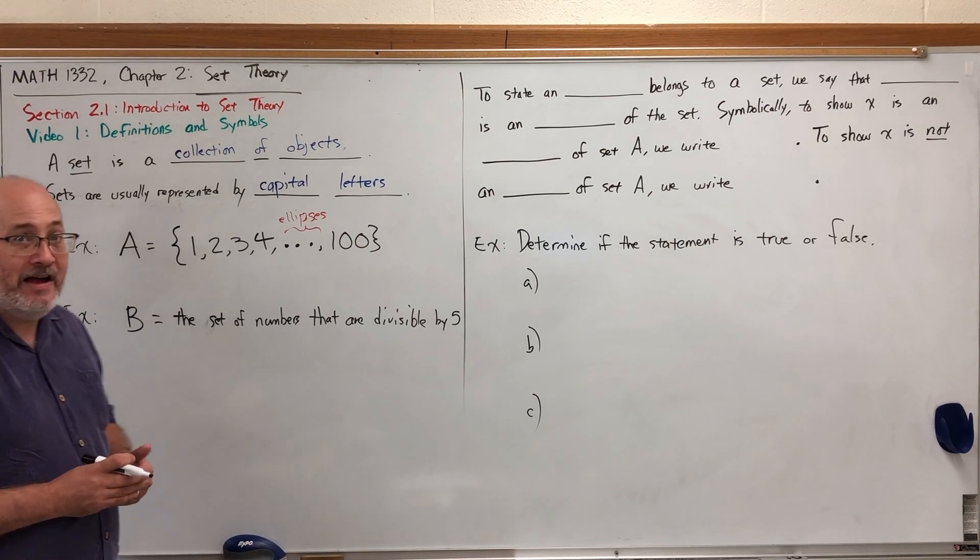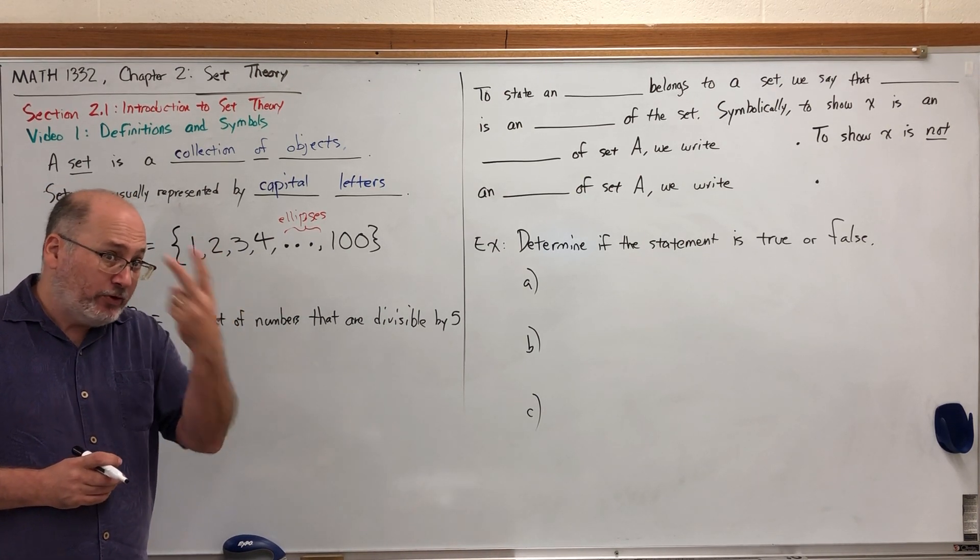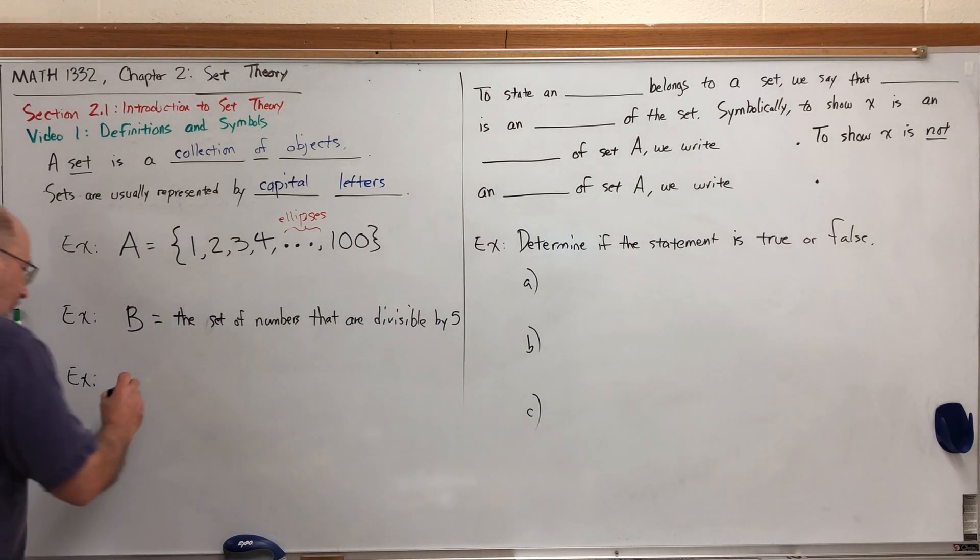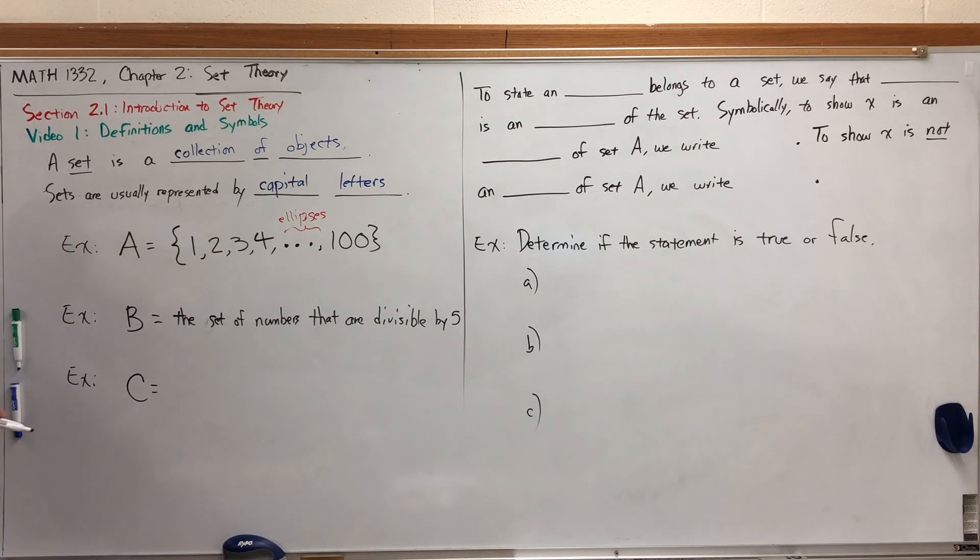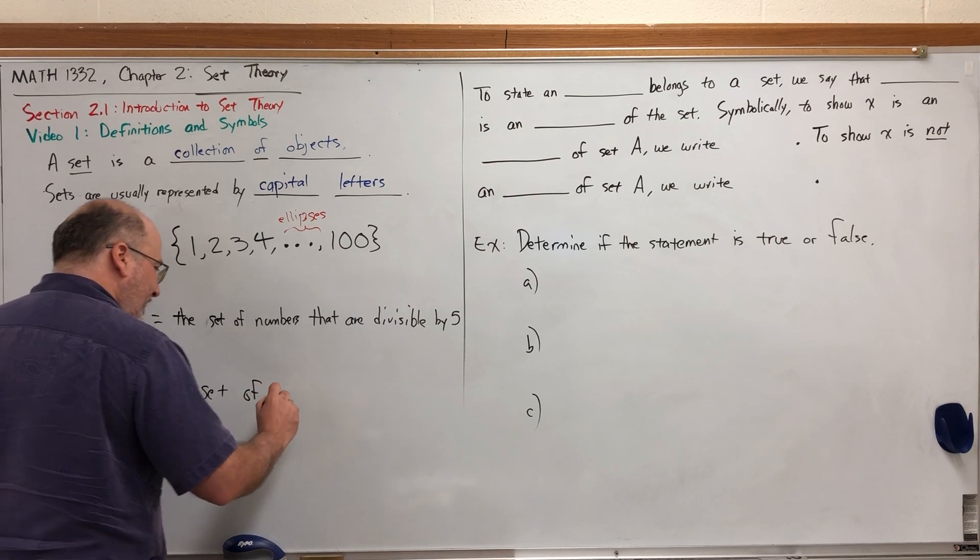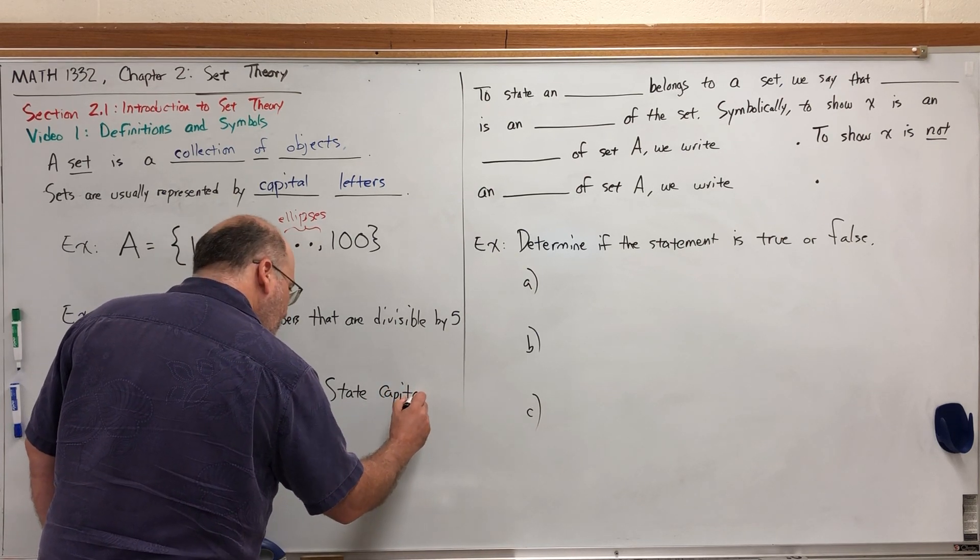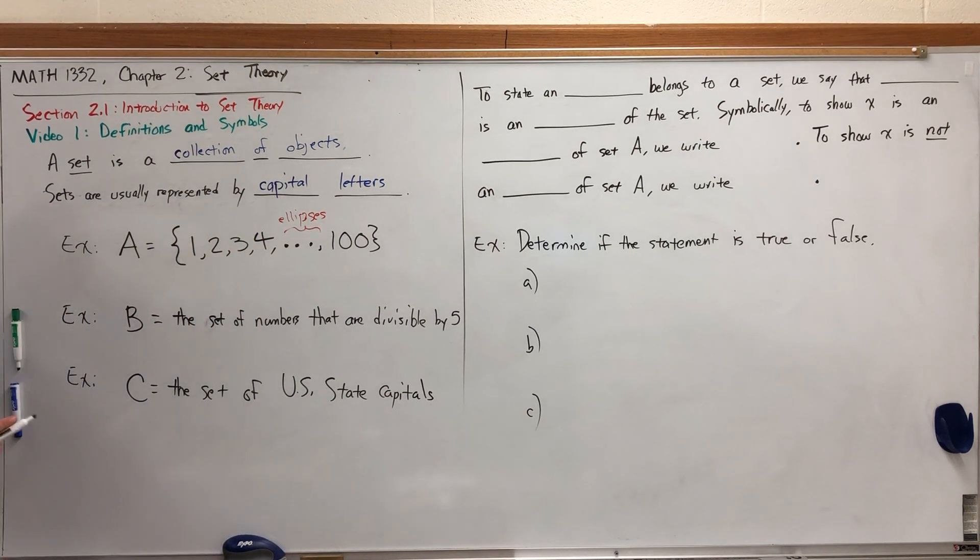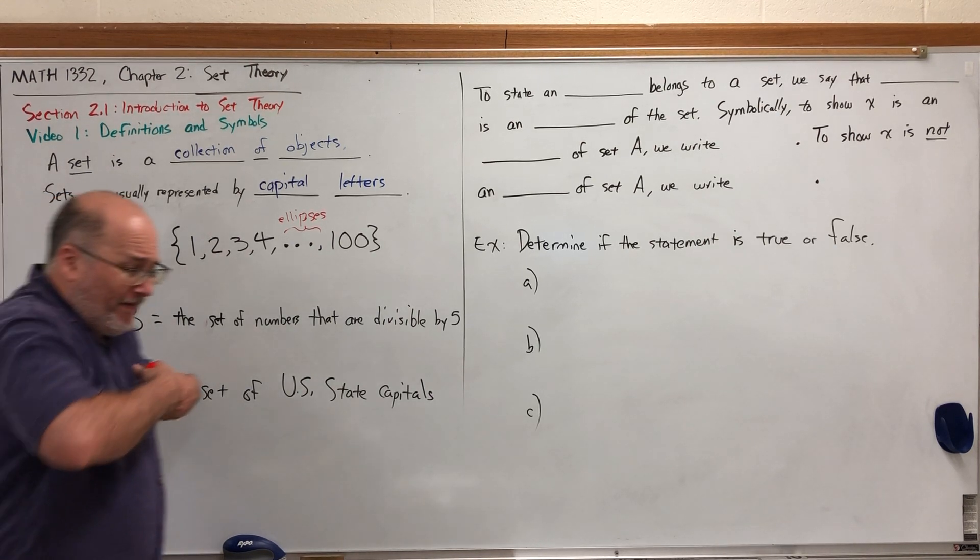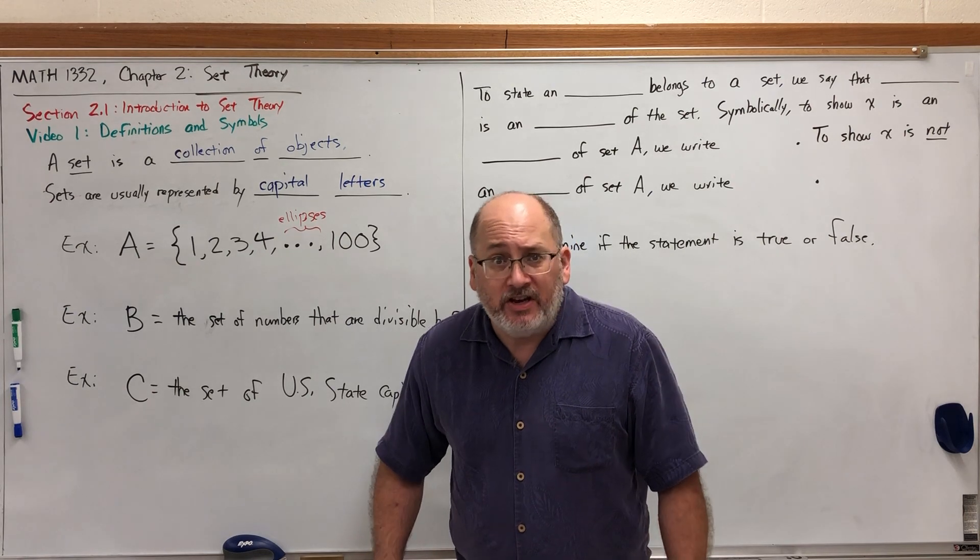There would be numbers that are not in set B such as 3 or 17. Nobody said that a set even had to contain just numbers. For example, we could say set C is the set of US state capitals. Whether or not you know if an element belongs to a set depends upon your knowledge base.